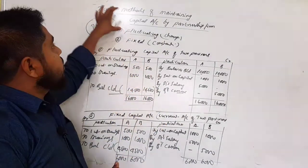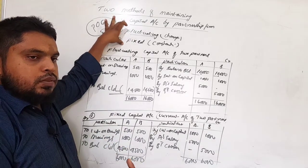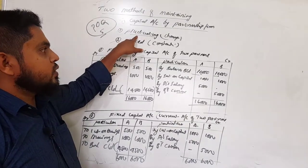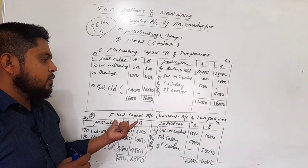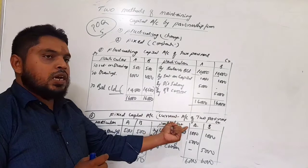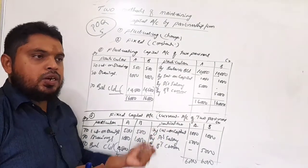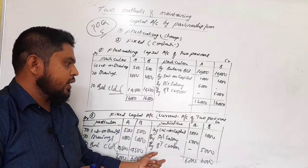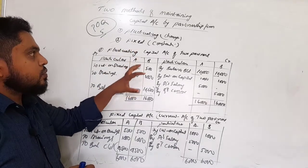It is clear that a partnership firm maintains capital under two systems. First, the fluctuating capital system, where all adjustments are maintained in the capital account itself. Second, the fixed capital system, where a separate current account is prepared to record adjustments like interest on capital, salary, commission, drawings, interest on drawings, and profit share. This is about the methods of capital of a partner, which is one of the basic fundamentals of a partnership firm.